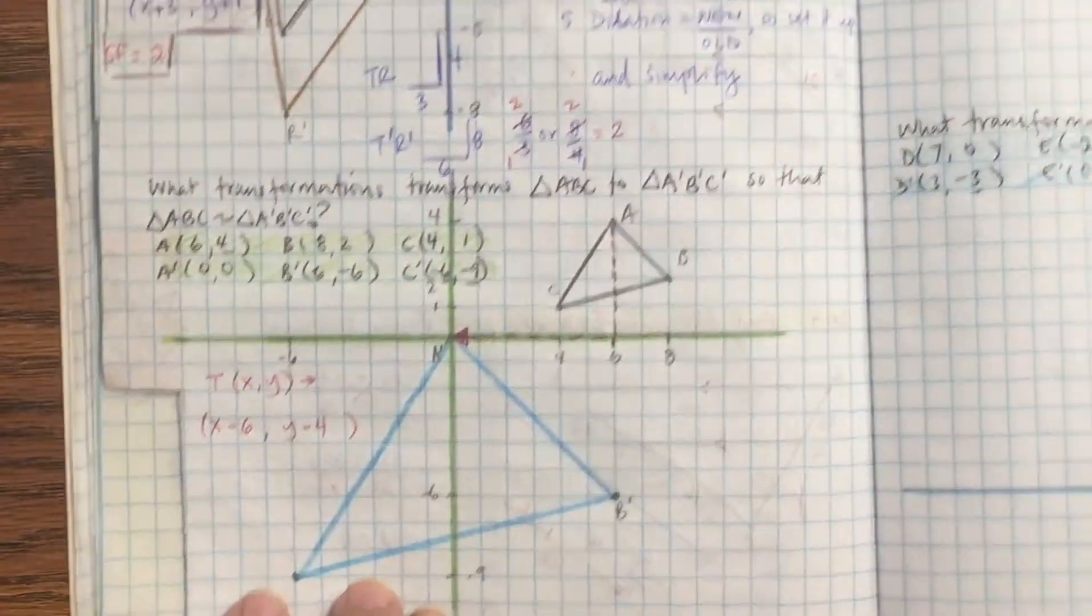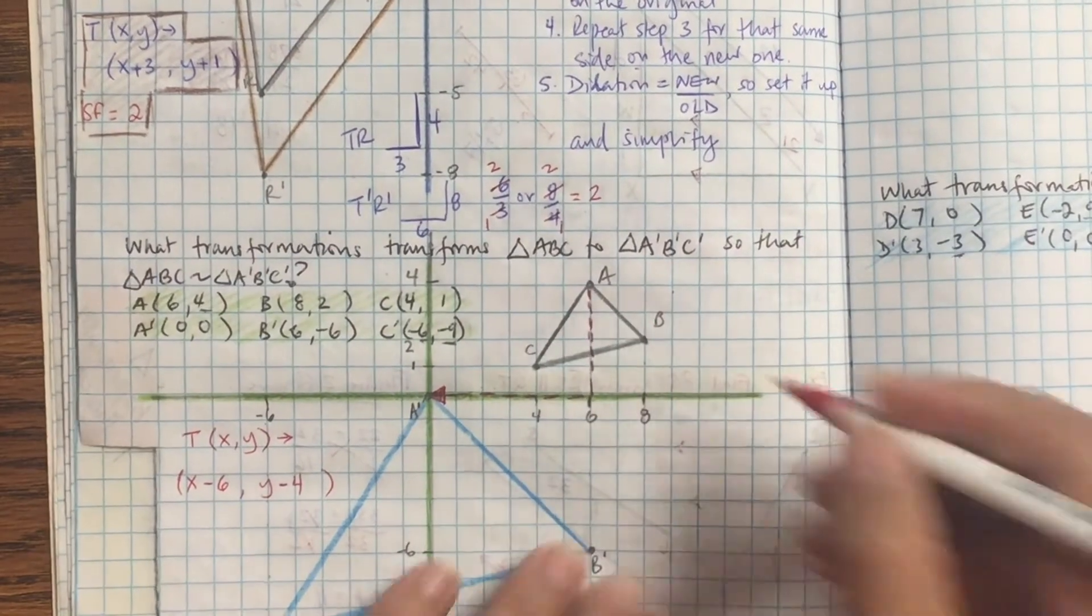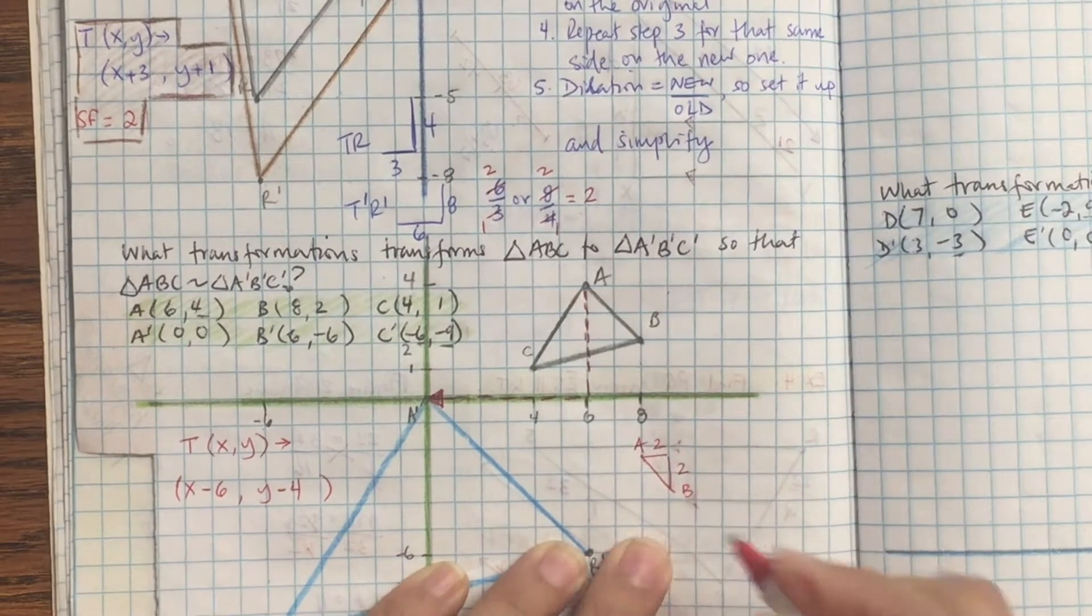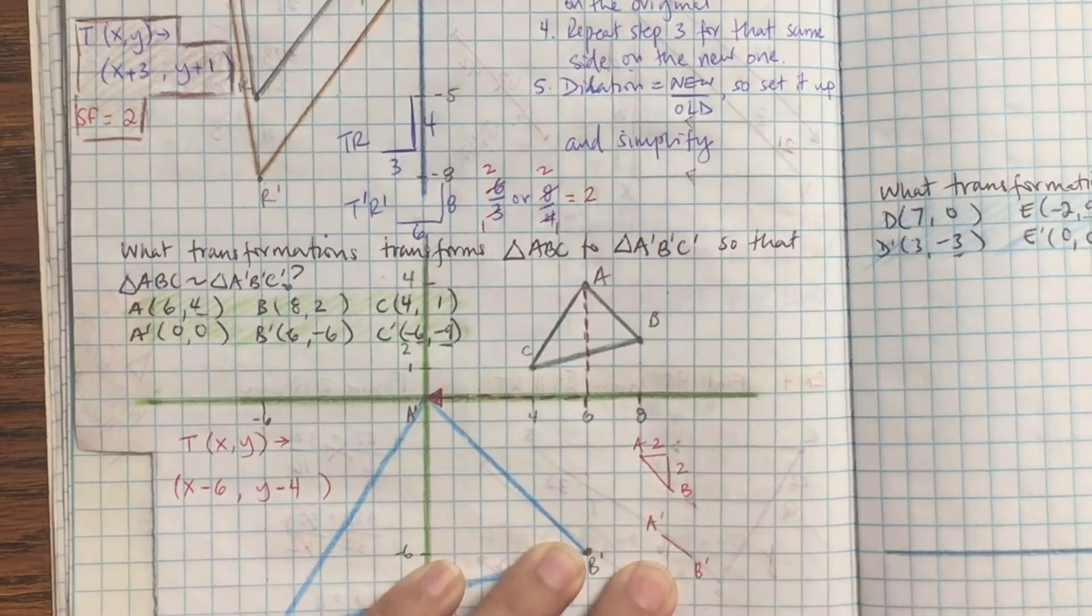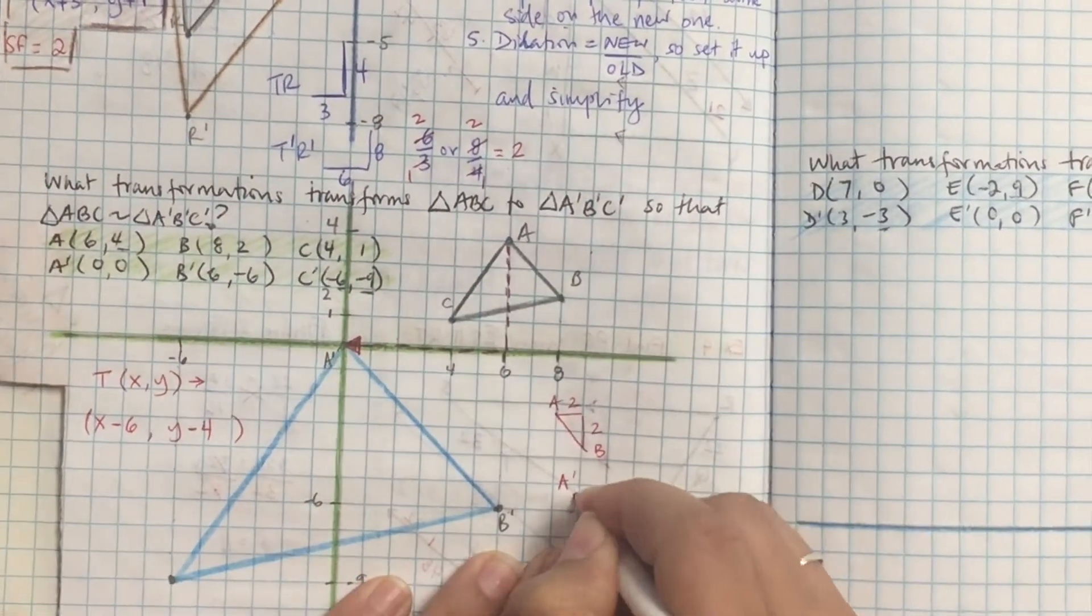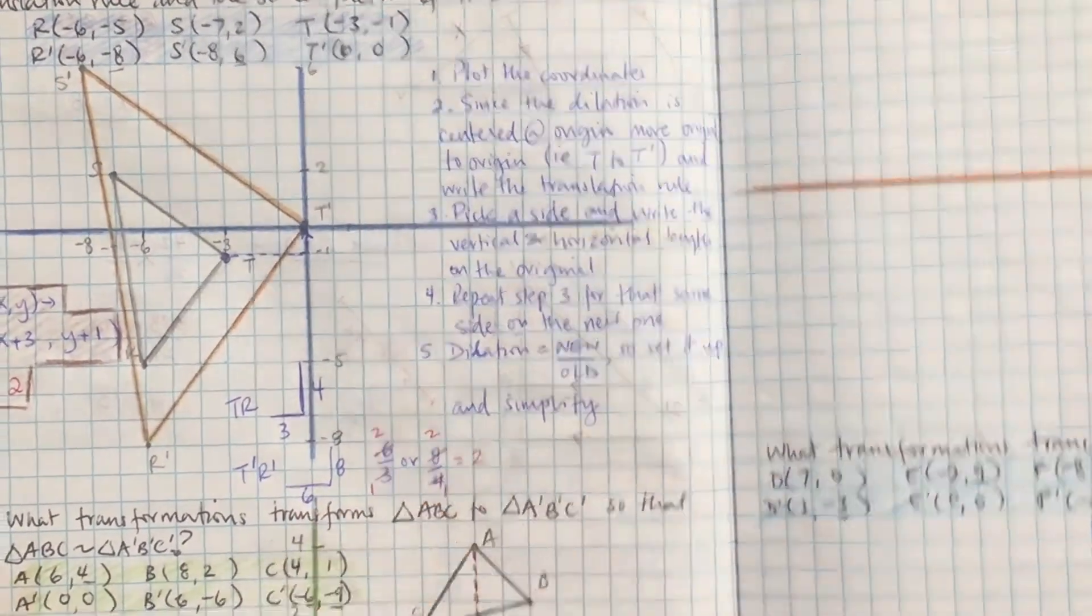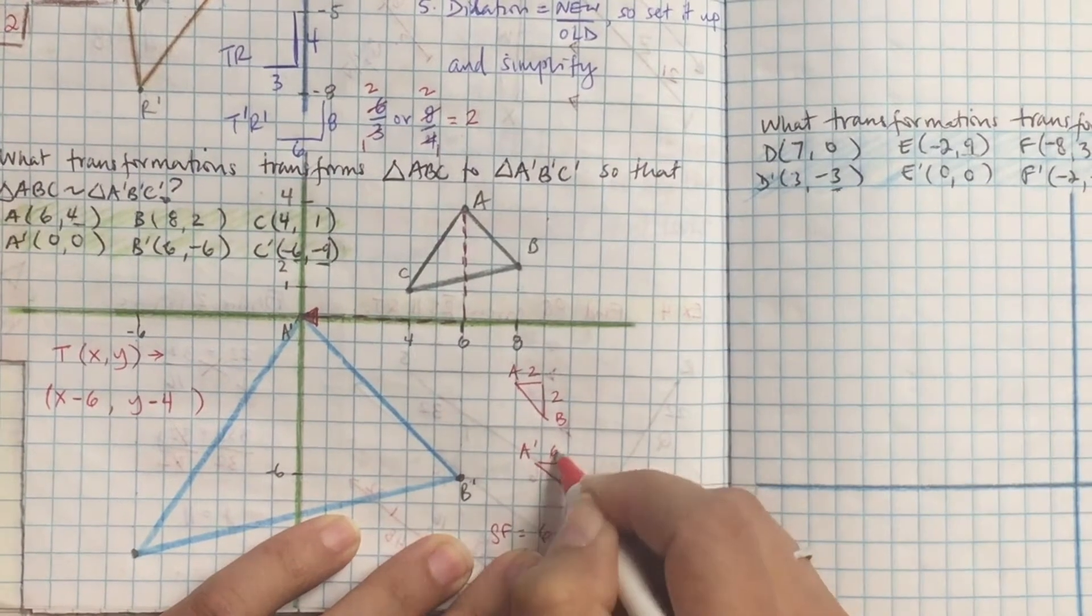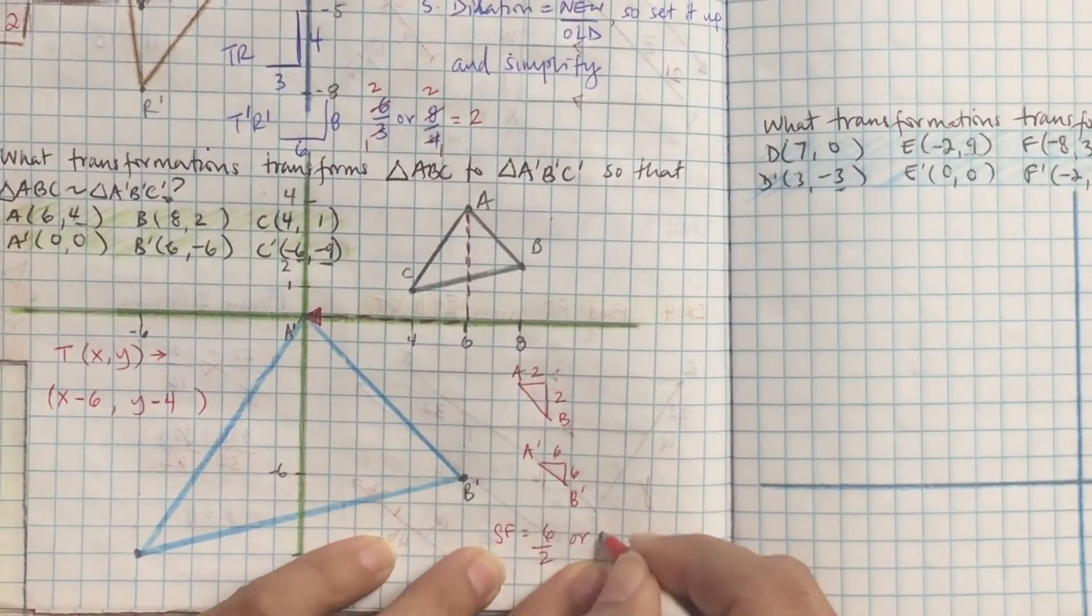Let's figure out our dilation. So remember, pick a side and write the vertical and horizontal length of the original. So I'm going to do AB. So that's going to be 2, 2. And I'm going to do the same thing for the new one, A prime and B prime. So that's going to be 6, 6.